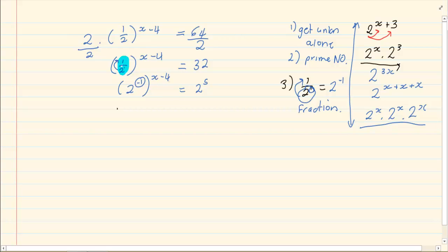Then we remove all brackets. This again is your exponential rule where we use the distributive law. So I have 2 to the power of minus 1x plus 4. Because minus 1 times minus 4 equals to positive 4. Equal to 2 to the power of 5.